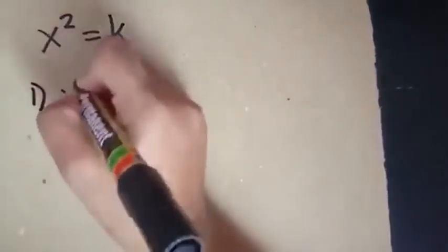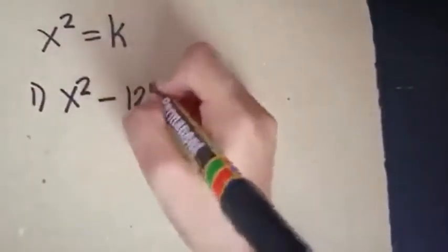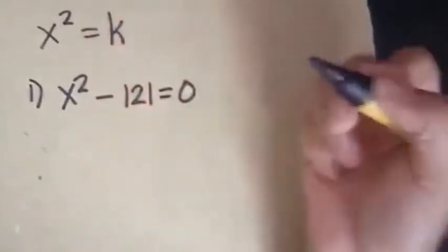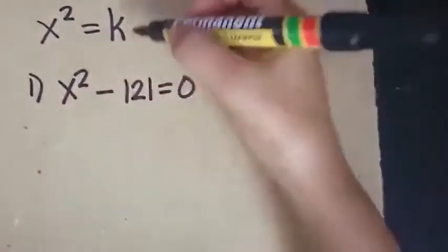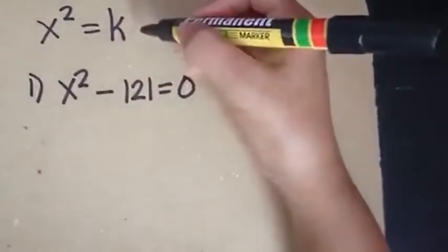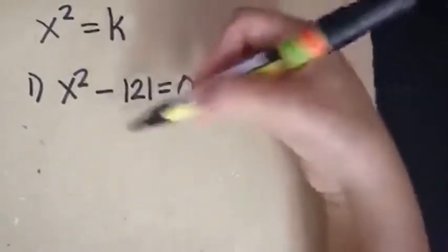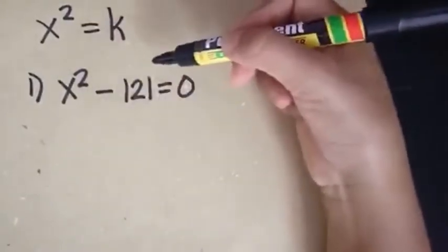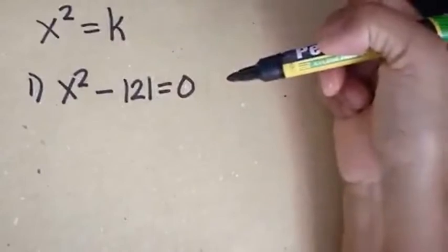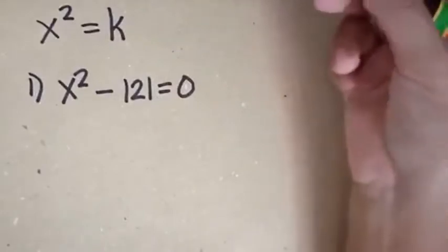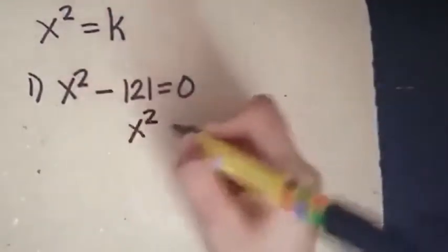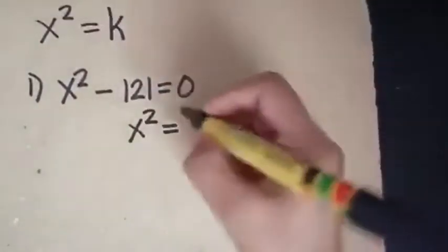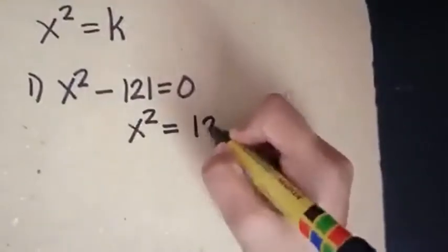Suppose we have x squared minus 121 equals 0. The first thing we should do is write this quadratic equation into the form x squared equals k. We do that by transposing the constant term, negative 121, to the other side of the equation. Take note that if you transpose, you change the sign. So x squared equals positive 121.